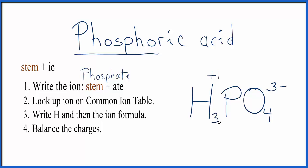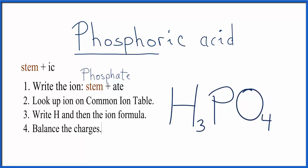That means I'll need 3 hydrogen atoms. 3 times plus 1, that's plus 3. That'll cancel out the minus 3 and give us a net charge of 0. And that makes the formula for phosphoric acid, H3PO4.